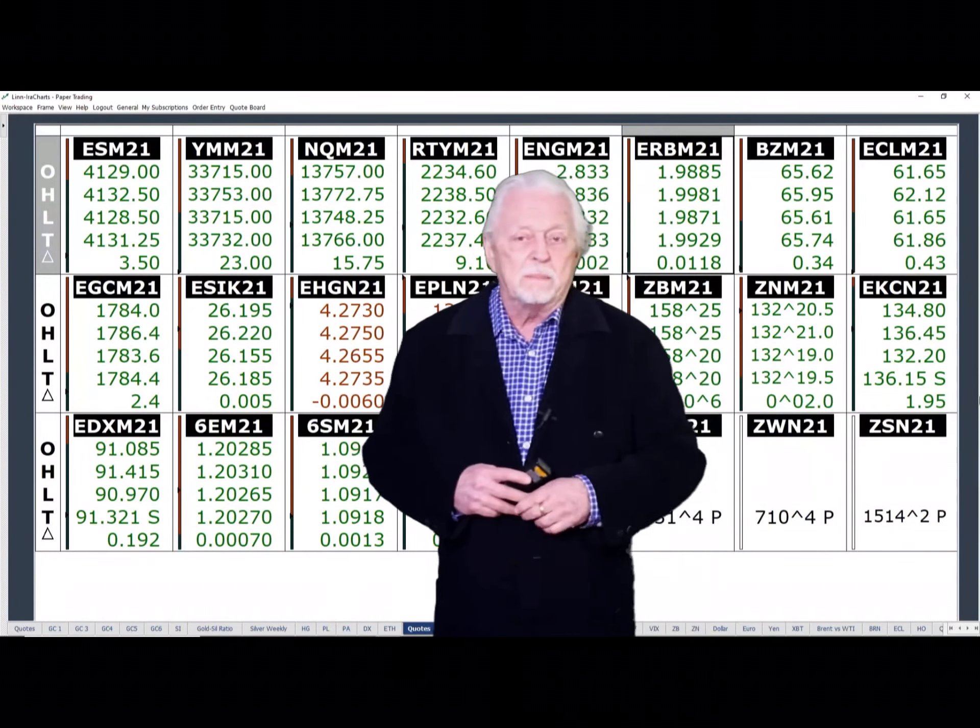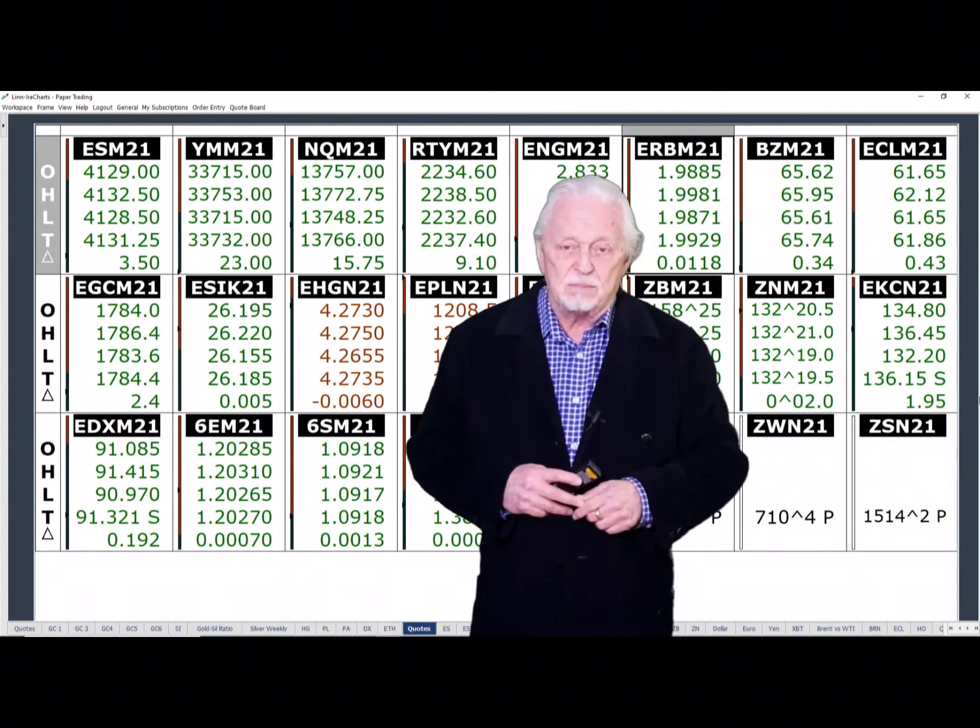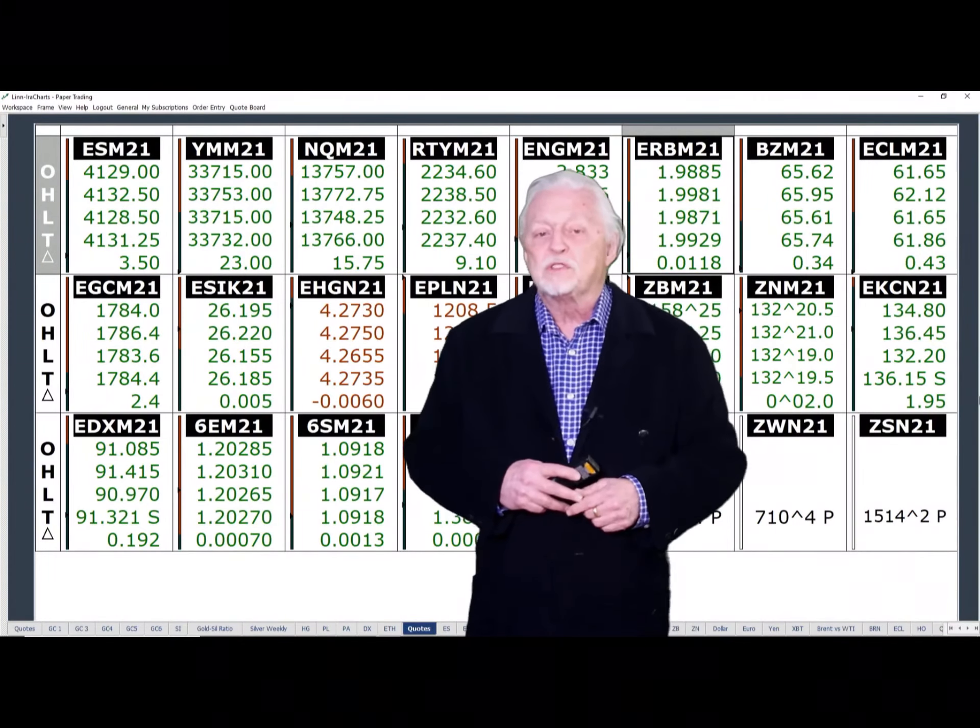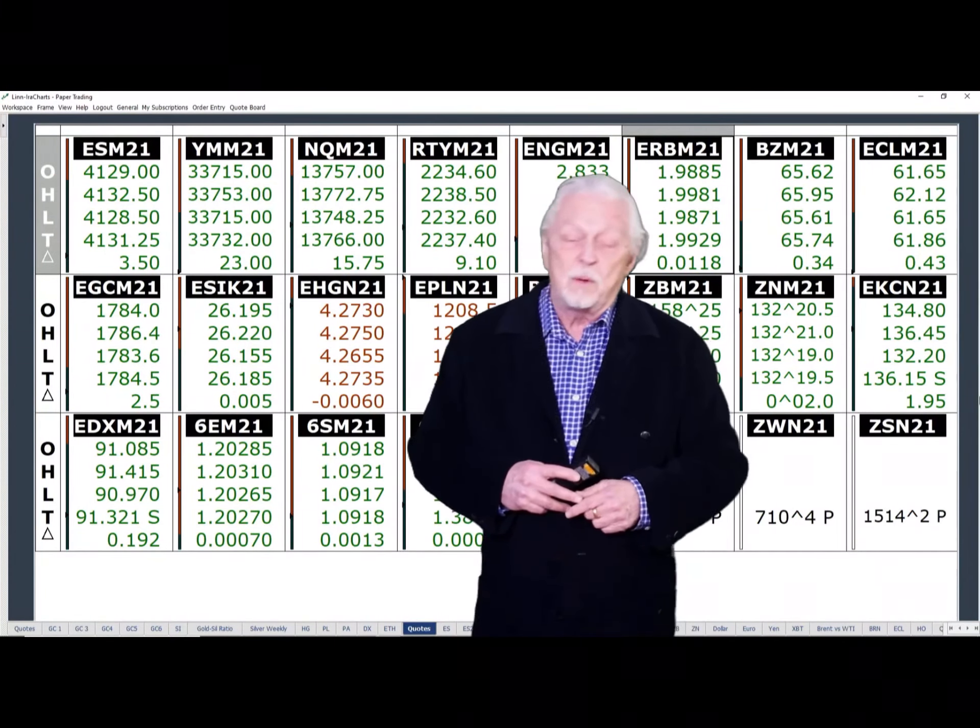Instead of the approximate 20 percent capital gain tax, the new proposal is for 39.6 percent. So they want to double it.